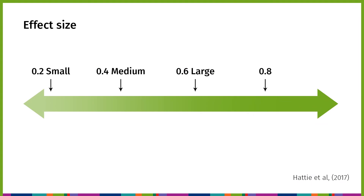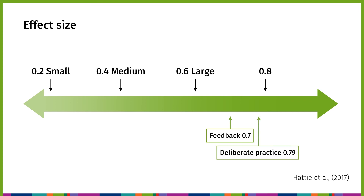In education research, an effect size of 0.2 is relatively small and an effect size of 0.6 is large. The effect size for feedback is 0.7 and for deliberate practice 0.79. So according to Almarodi, Fisher, Assof, Hattie, and Frey, both have the potential to considerably accelerate student achievement.